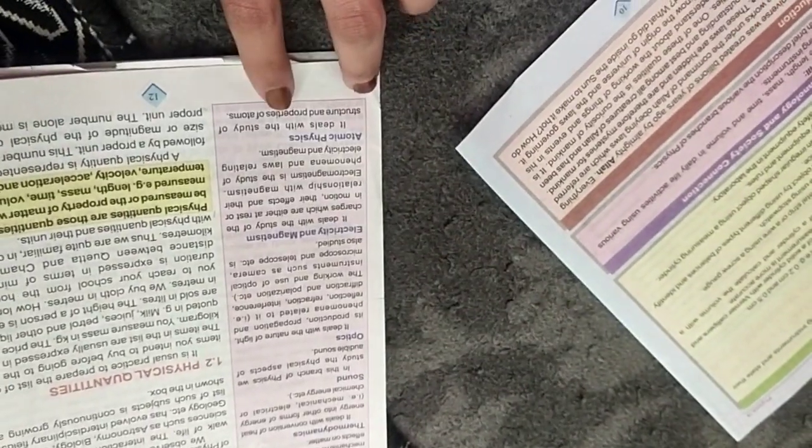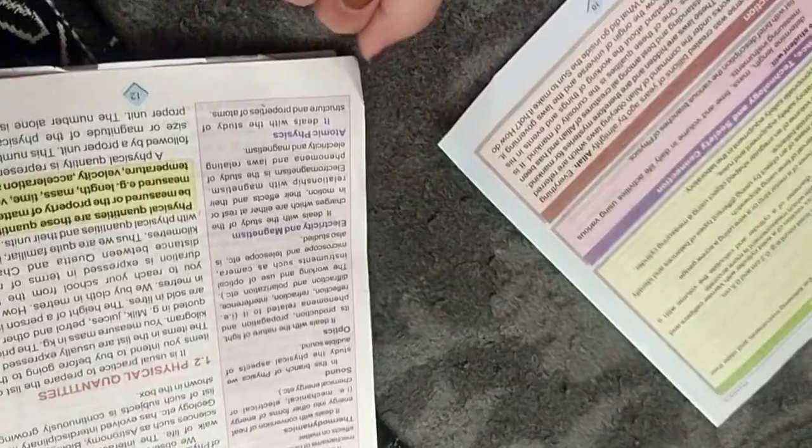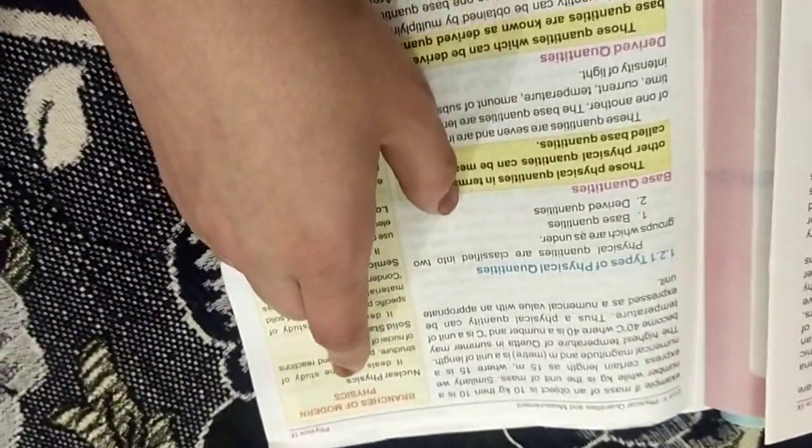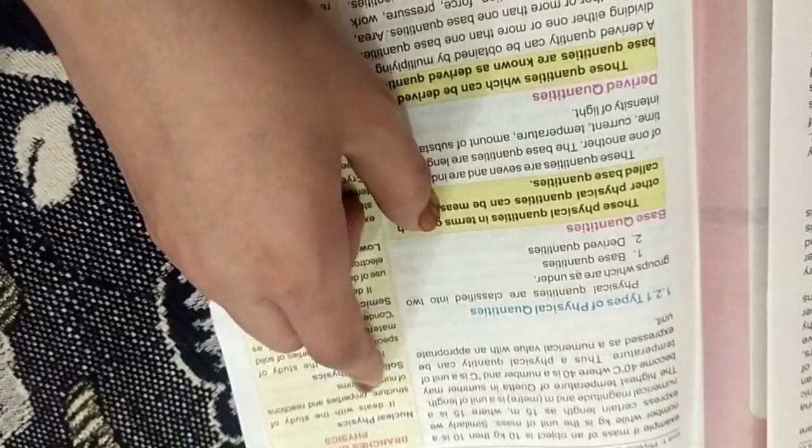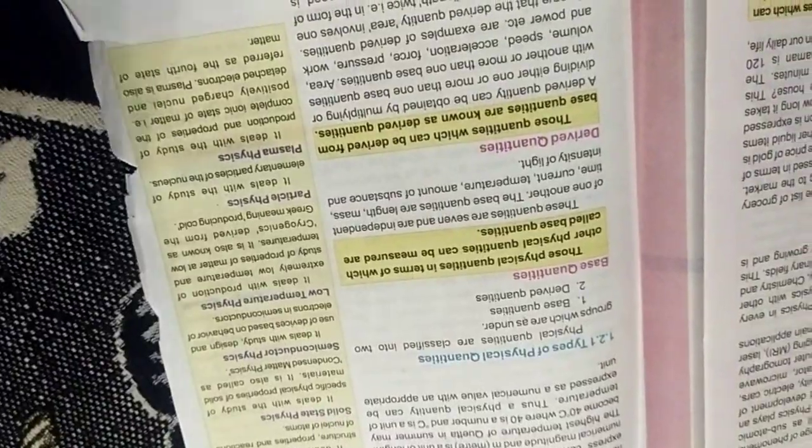Atomic physics, which is called the atom's properties and structures. It deals with the study of structure, properties and reactions of nucleus of atoms. The nucleus of atoms is the structure, properties and the reactions of nuclear physics.